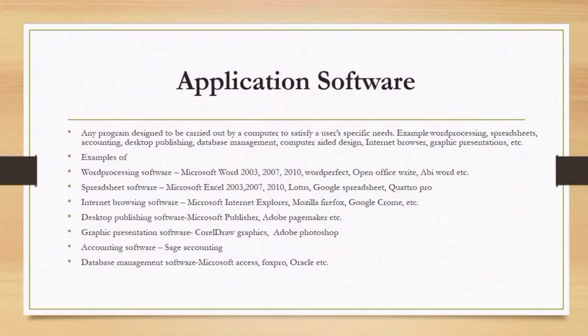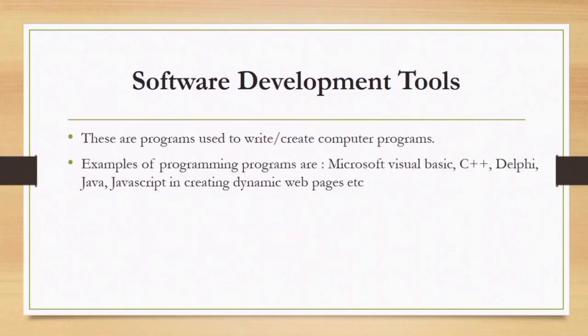Application software is designed to help the user — a person like you and me who interacts with the computer. These are also referred to as computer packages and help us achieve desirable goals. For example, if I want to write a letter to somebody, I will use Microsoft Word to write it and then either send it by email or print it.